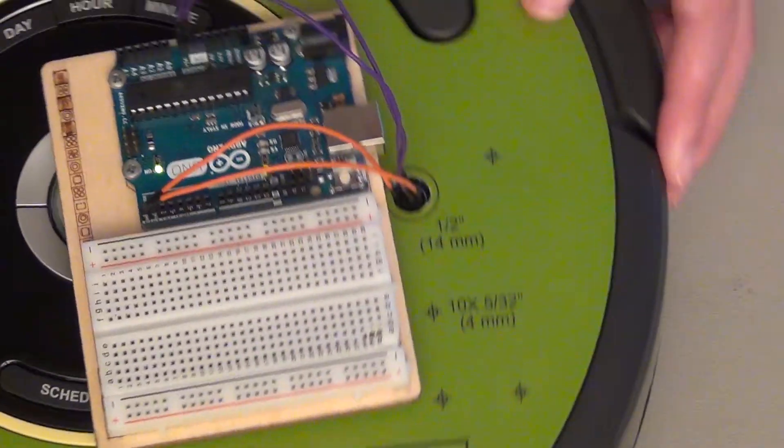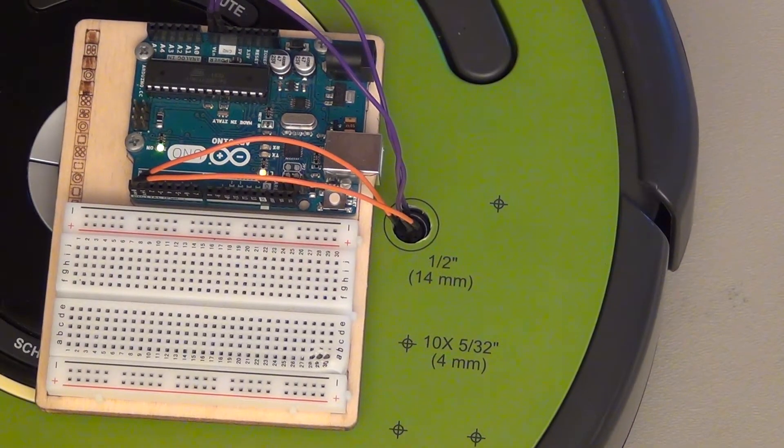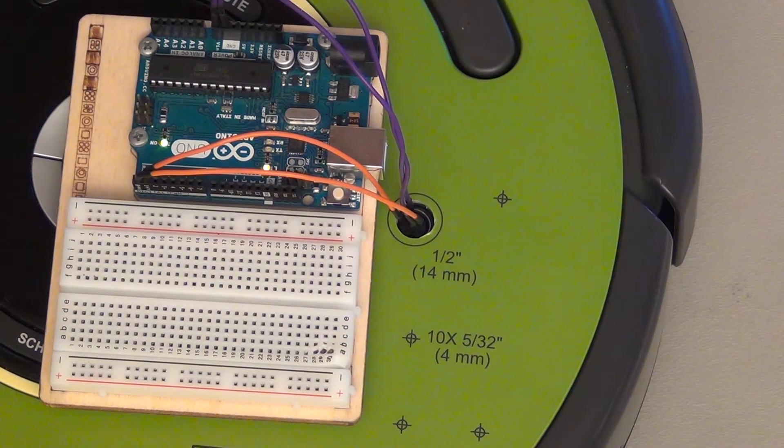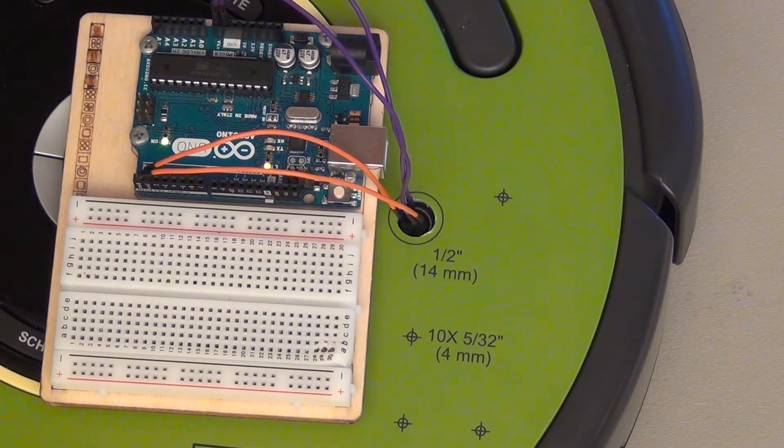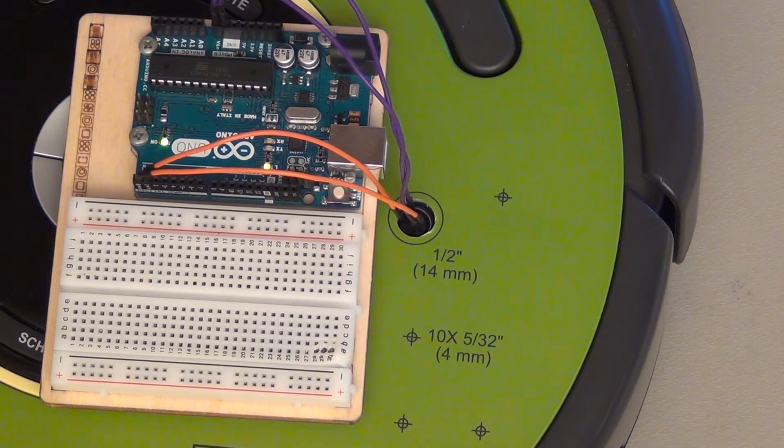But one other thing to remember that I forgot to mention in the other video is that when you start using it, after it's been off for a while, you have to reset the baud rate, because the default is beyond what the Arduino is capable of handling.